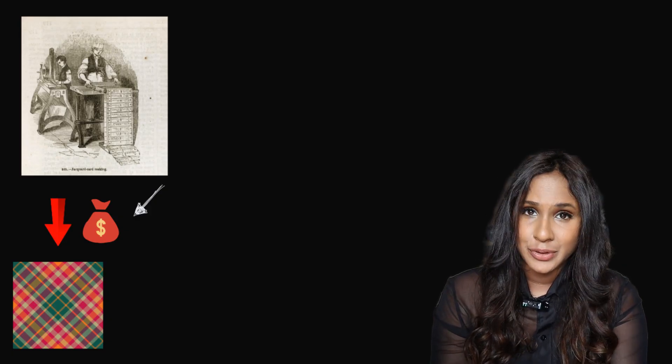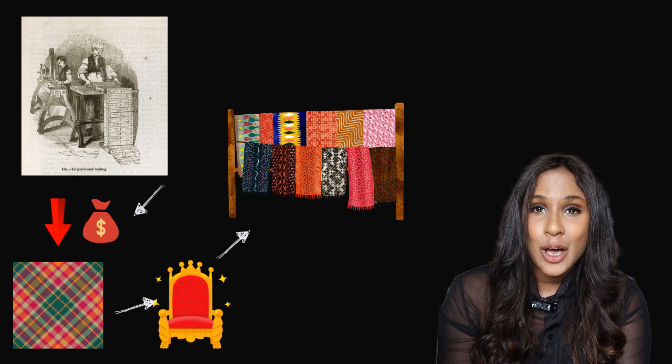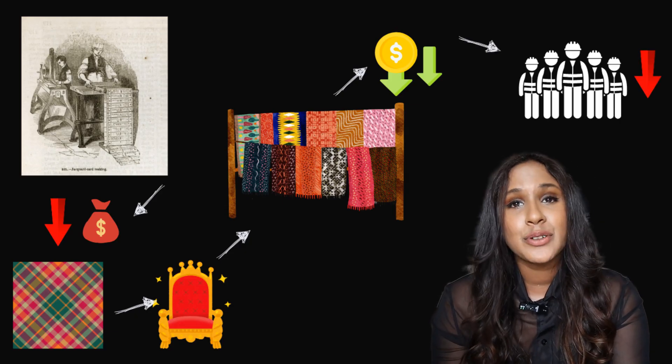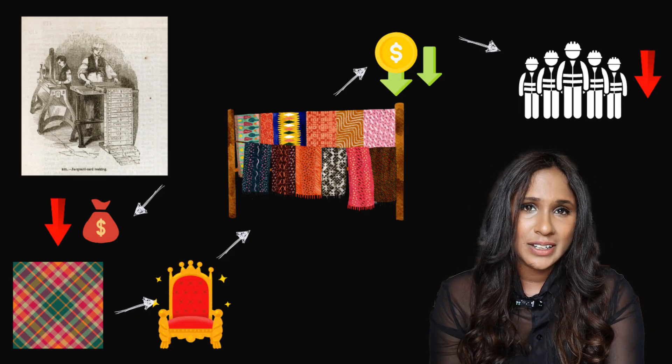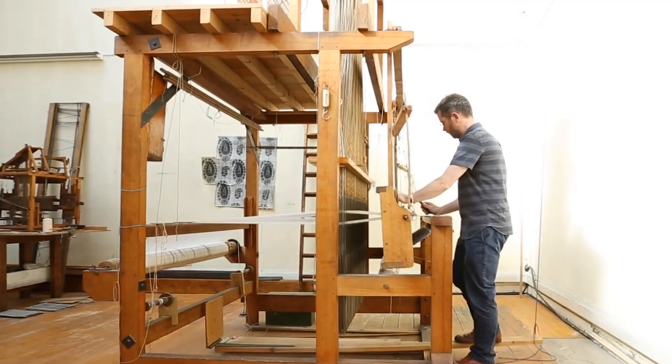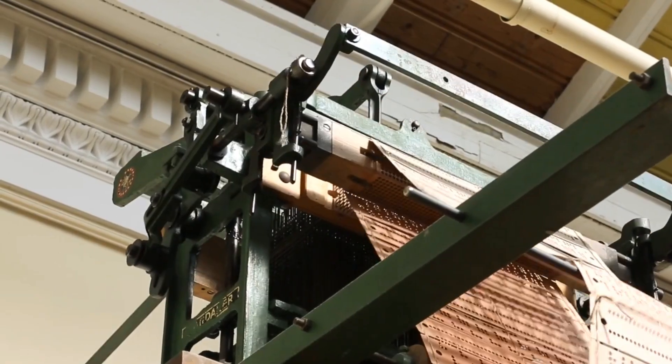And this was in 1804. This loom innovation essentially introduced an early form of automation. The widespread adoption of Jacquard's invention dramatically lowered the cost of producing intricate, fashionable fabrics — fabrics which were once reserved for the wealthy but could now be mass-produced, making them affordable to a much wider market. It also significantly reduced the need for human labor. This is a clear example of the impact automation has and continues to have even now. Once Jacquard's invention reached the public, the idea spread like wildfire.